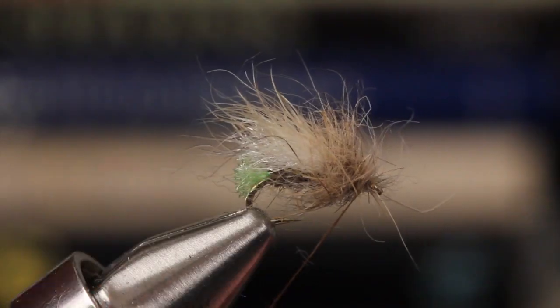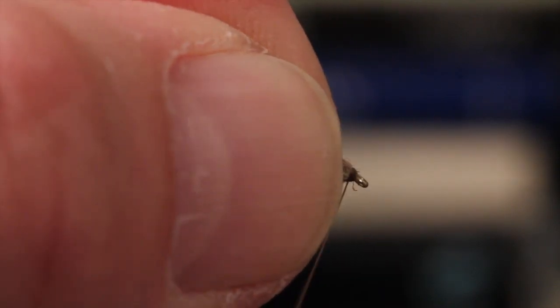Starting at the wing, begin taking wraps to form an extremely bushy front end on the fly. Pull the fibers rearward to expose the eye and take a few wraps to hold the hare's mask back.